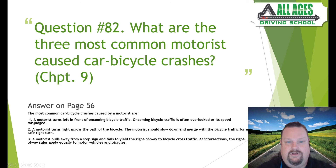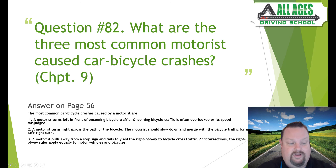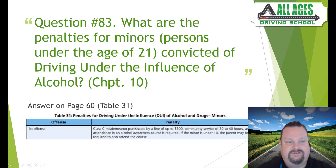Question number eighty-two: what are the three most common motorist-caused car-bicycle crashes? Chapter nine, page 56. Number one: a motorist turns left in front of oncoming bicycle traffic. Number two: a motorist turns right across the path of the bicycle. Number three: a motorist pulls away from a stop sign and fails to yield the right of way to a bicycle in cross traffic.